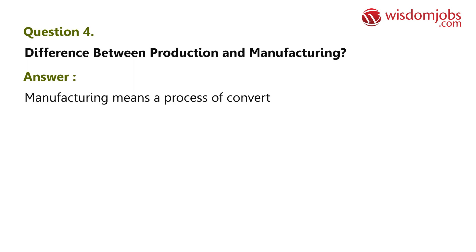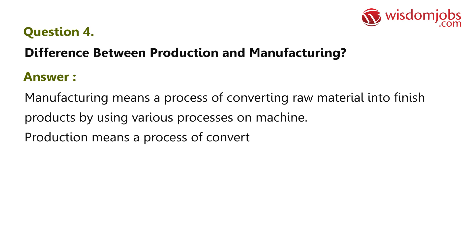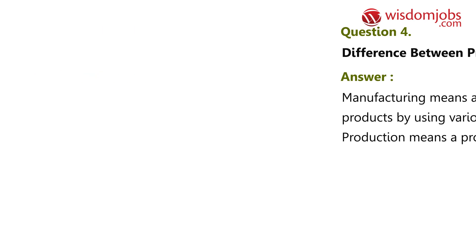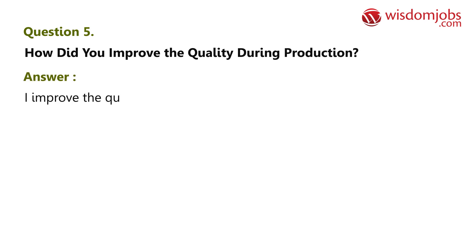Question 4: What is the difference between production and manufacturing? Manufacturing means a process of converting raw material into finished products by using various processes on a machine. Production means a process of converting inputs into outputs.